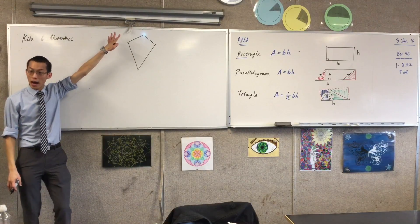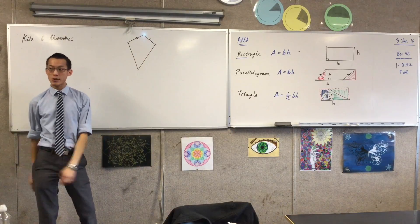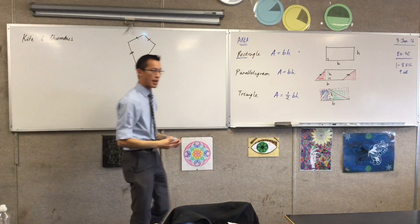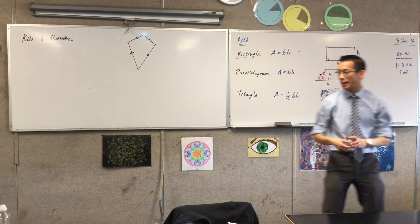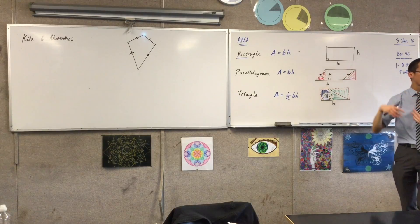What makes a kite a kite is that you've got a pair of adjacent sides equal up there, and you've got another pair of adjacent sides that are equal down there. Now, it's very easy to turn a kite into a rhombus.